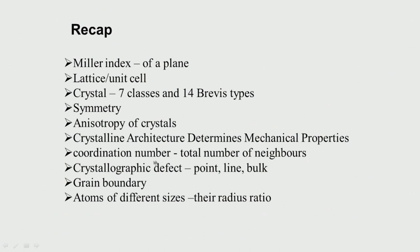Then we looked at something called coordination number — that means the total number of neighbors that each atom will have. What is the coordination number for BCC, what is the coordination number for HCP, and so on. And then defects — because when the crystal starts growing it is not going to be completely perfect. There are going to be point defects, line defects, bulk defects, and impurities. We looked at defects because they affect the physicochemical properties of the crystal or metal.